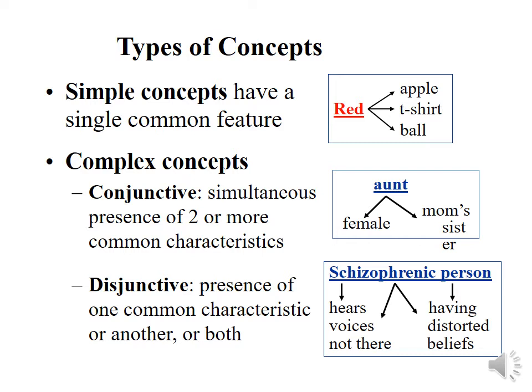With disjunctive concepts, you're looking at one, or both, or either. A schizophrenia diagnosis is an example: a person could have hallucinations, or only delusions (distorted beliefs), or only distorted beliefs with no hallucinations, or they could have both. So disjunctive means it's an either/or, or an and.